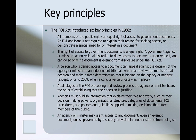Fourth, at all stages of the FOI processing and review process, the agency or minister bears the onus of establishing that their decision is justified. Fifth, agencies must publish information that explains their role and work, such as their decision-making powers, organisational structure, categories of documents, FOI procedures, and policies and guidelines applied in making decisions affecting members of the public. Sixth, an agency or minister may grant access to any document, even an exempt document, unless prevented by a secrecy provision in another statute from doing so.